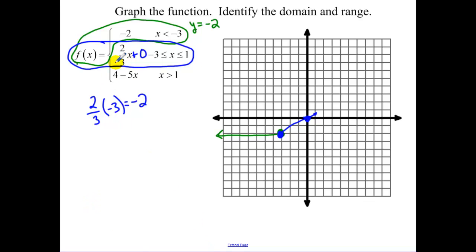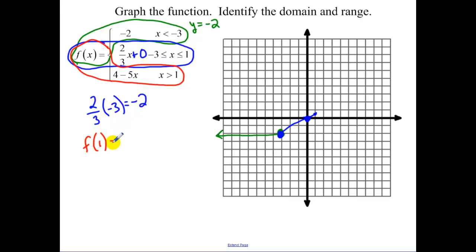For the bottom function, y equals negative 4 minus 5x. We find f of 1 to get a y-coordinate: 4 minus 5 gives negative 1. So at x equals 1, we have an open hole at negative 1. It's a negative-sloping line, so we go down 5 and right 1.